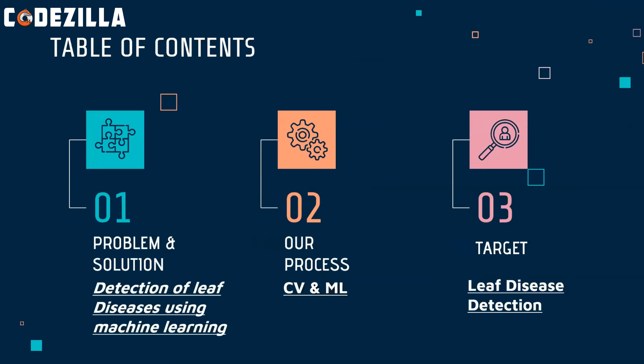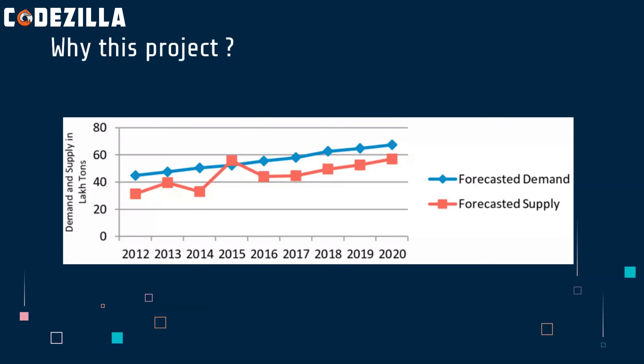The stepwise procedure to achieve the result is shown here but before moving on to the process, why specifically detection of leaf diseases out of all other problems? Well, most people in India are farmers who depend adversely on agriculture and aim to increase production and quality of their products. For some reason they are unable to meet the demands as you can see clearly in this graph.